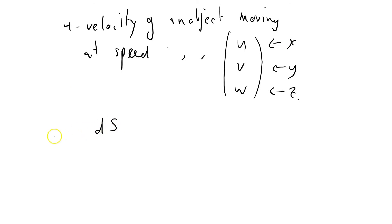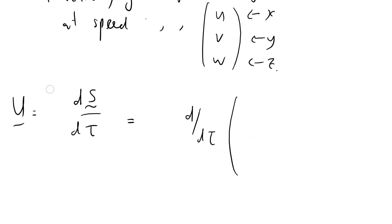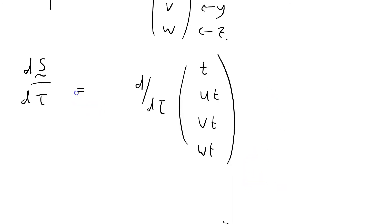So we've got the 4-velocity u equals ds by dτ equals d by dτ of the 4-velocity. That's going to be t, that's going to be u times t, I guess. That's going to be v times t, u, v, w times t as well. Let's see with dτ.